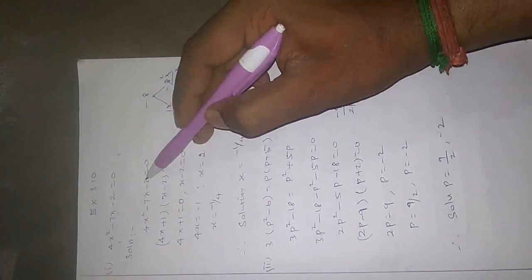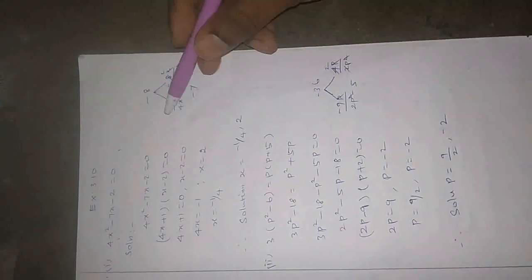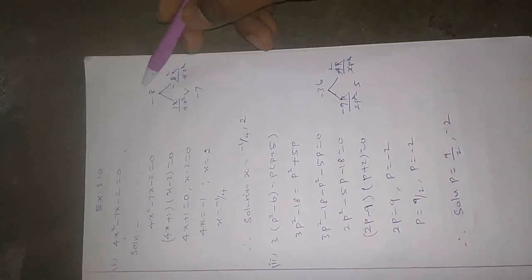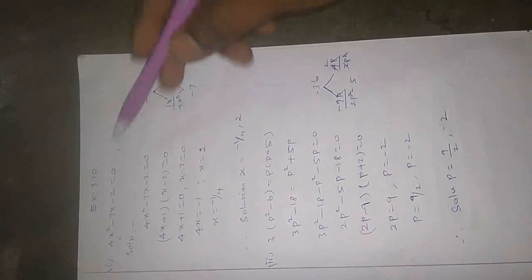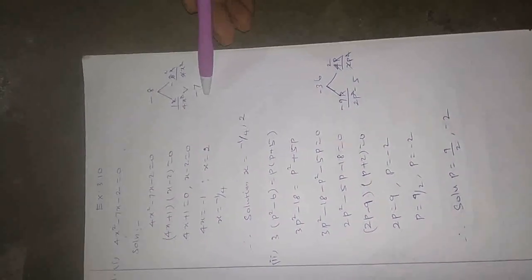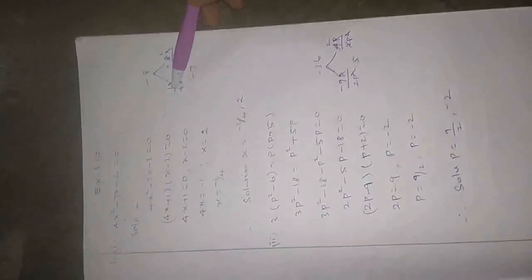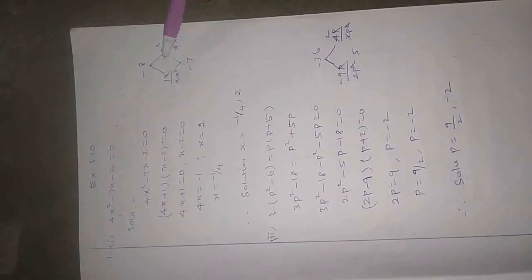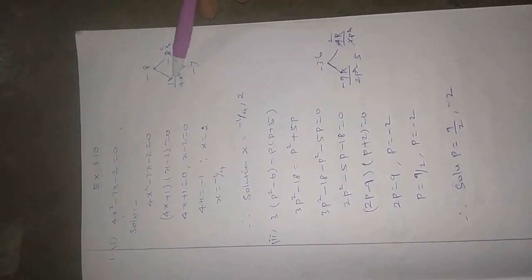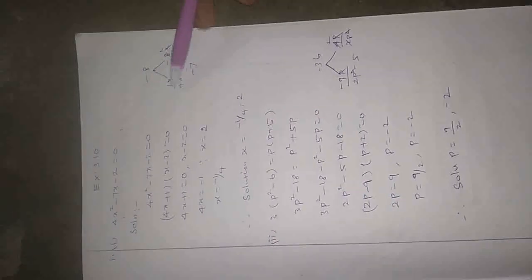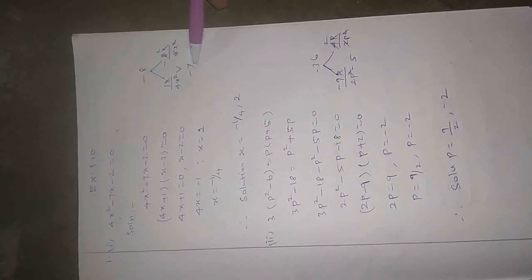Multiply 4 into 2 — that is 8. So, plus into minus gives minus 8. Multiply gives minus 8, add gives minus 7. The possible numbers: 1 into minus 8 equals minus 8, and 1 minus 8 equals minus 7.